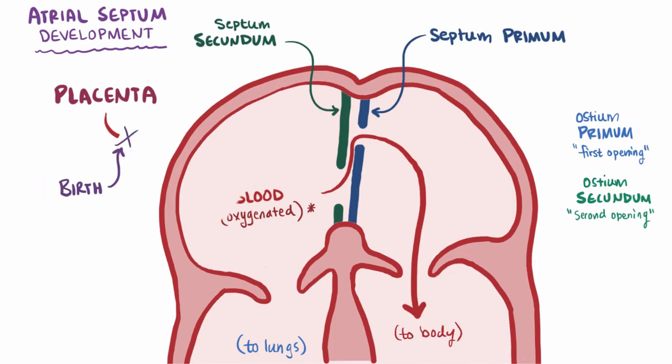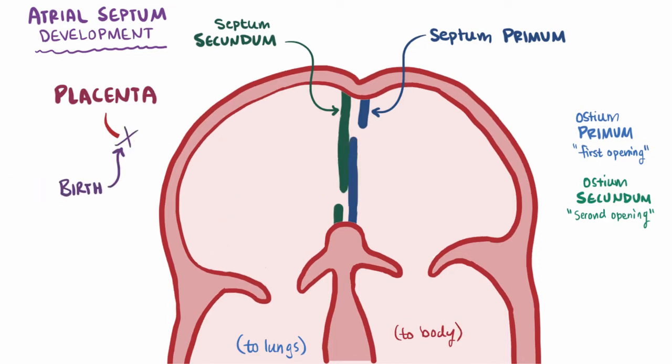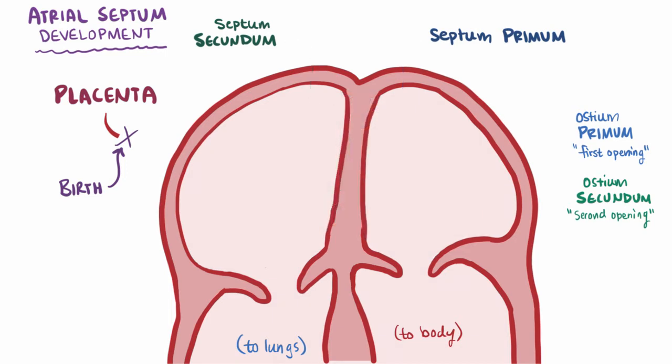At birth, the septum secundum and septum primum slap shut and then fuse and close off this foramen ovale, so we can rely on our own lungs for oxygen.